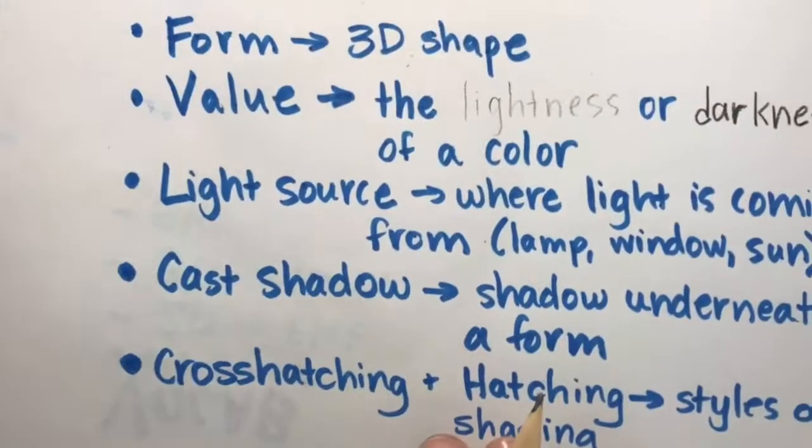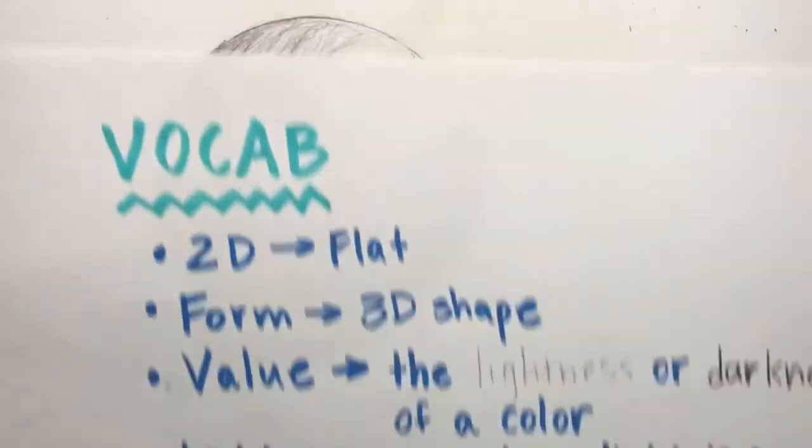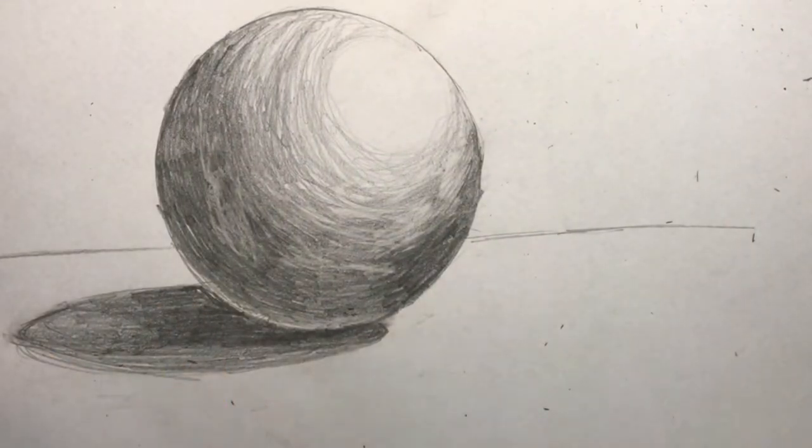Underneath my sphere, I have a cast shadow. And I used hatching and cross hatching to achieve my shading.